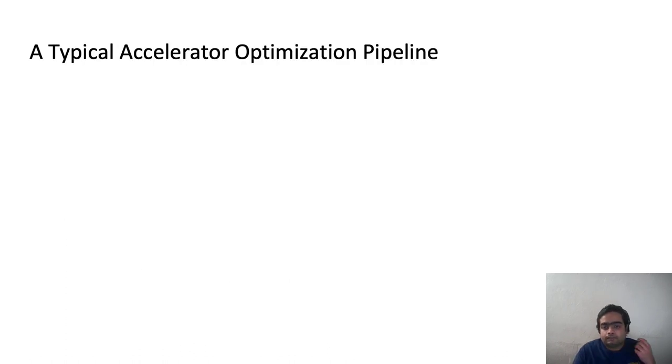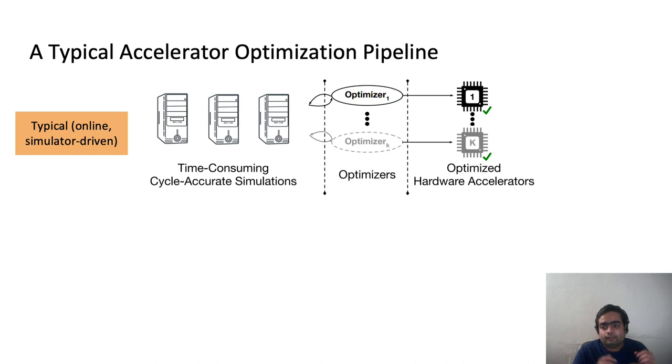Okay, so let's get started. A typical accelerator design or accelerator optimization pipeline is simulator-driven, in that a user typically first devises a cycle-accurate simulator, and this already takes a lot of time to design. Then the user runs time-consuming simulations in this simulator and uses the resulting output of the simulator to optimize the accelerator using a black-box optimization method.